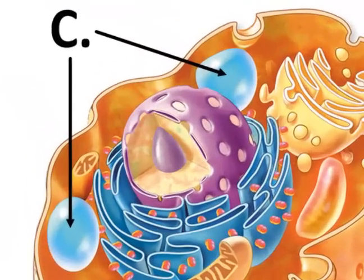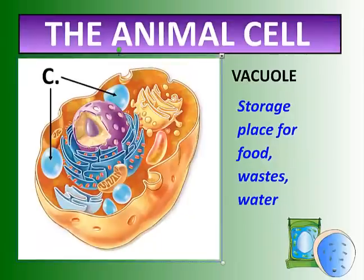Then we have vacuoles. In this photo there are actually four vacuoles. Vacuoles are a storage place for food, wastes, and water — not all in the same one, but each vacuole can store food, or waste, or water. All cells have these organelles called vacuoles.